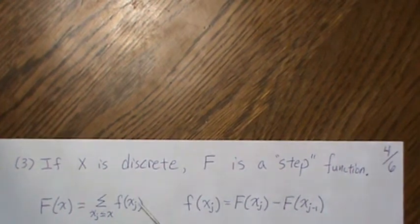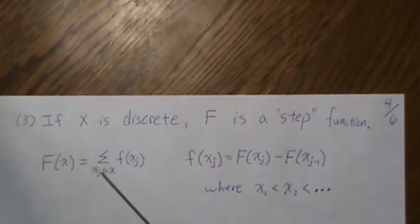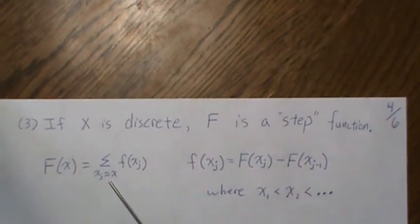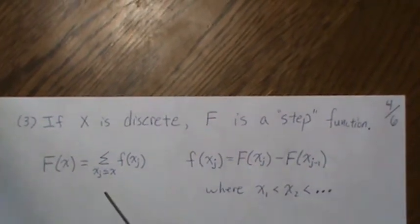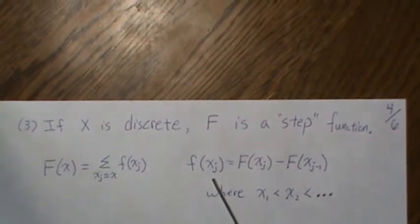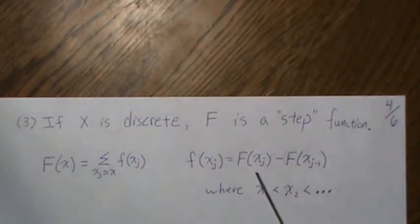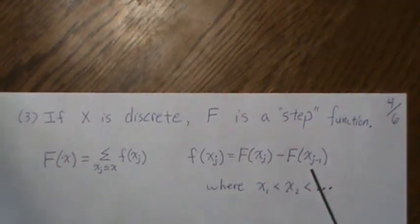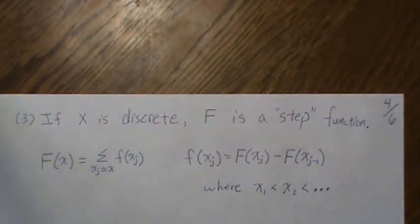When X is discrete, F is a step function, defined as the sum of the probabilities P(X = xj) for all xj less than or equal to x. Since F of xj is a probability, it equals the difference F of j minus F of j minus one, assuming distinct ordered points.